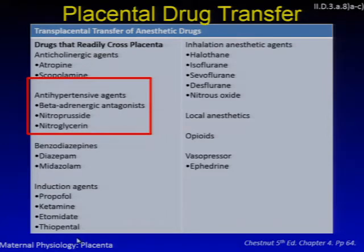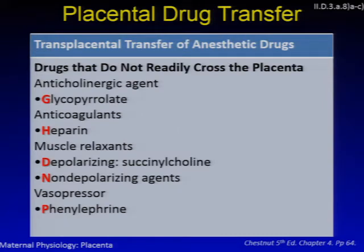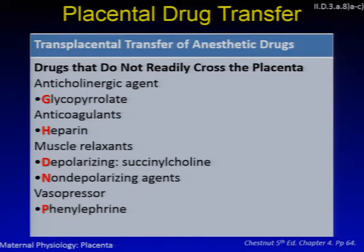Nitroglycerin, also sometimes used as a tocolytic, crosses the placenta in a limited fashion and results in minimal changes to fetal hemodynamics. Placental production of nitric oxide enhances the uterine relaxation caused by nitroglycerin. An easy mnemonic for anesthetic drugs that do NOT cross the placenta is GHDNP — 'Good Heavens Do Not Penetrate' — standing for glycopyrrolate, heparin, depolarizing muscle relaxants, non-depolarizing muscle relaxants, and phenylephrine.